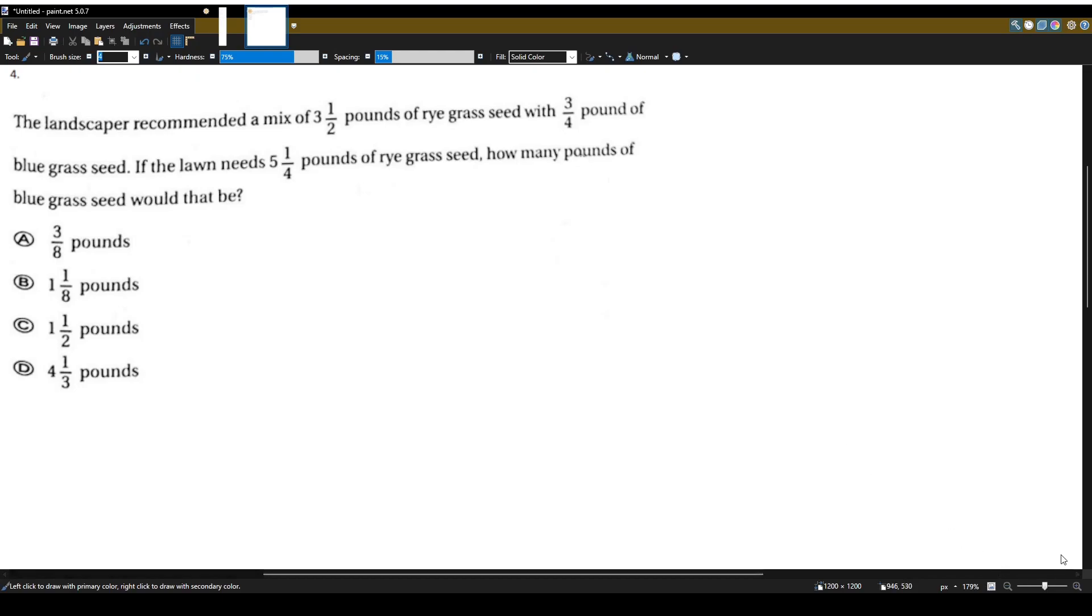So this is a classic proportion problem where they give us what's like the default recipe and we want to compare it to what we need. So the default recipe is, let's write it as a fraction, three and a half pounds of rye grass seed for every three-fourths pound of bluegrass seed. This is the original recipe.